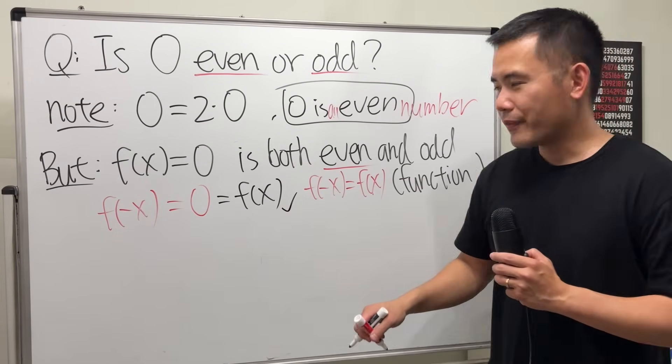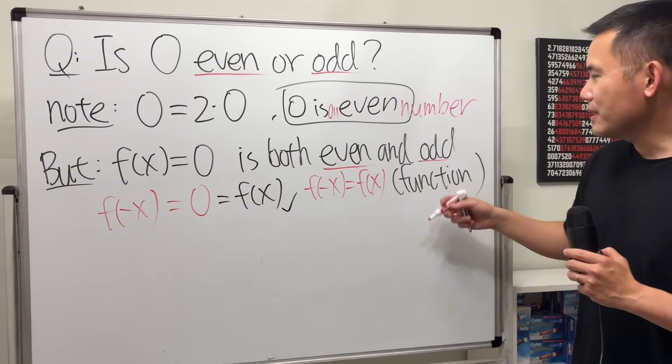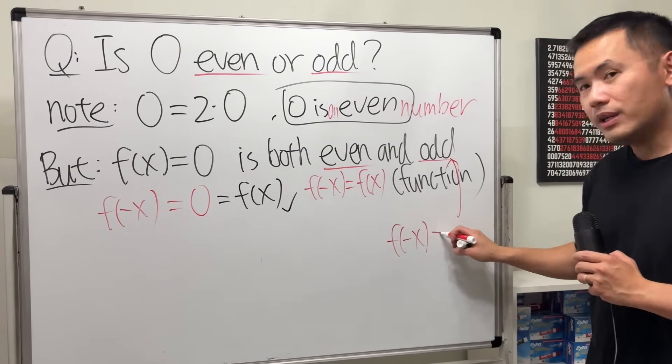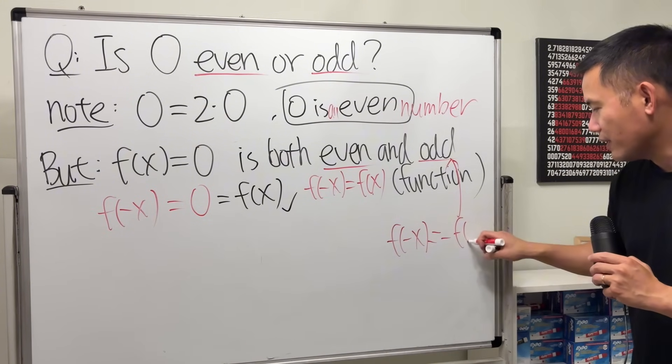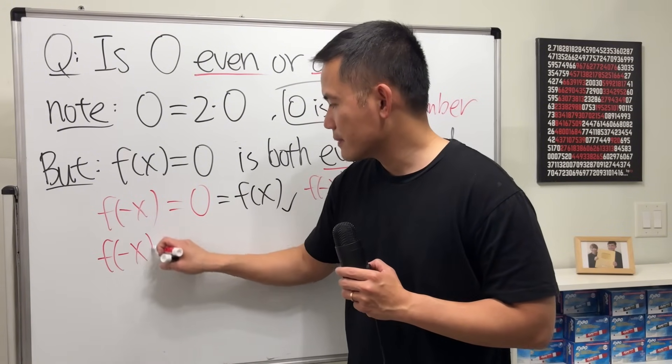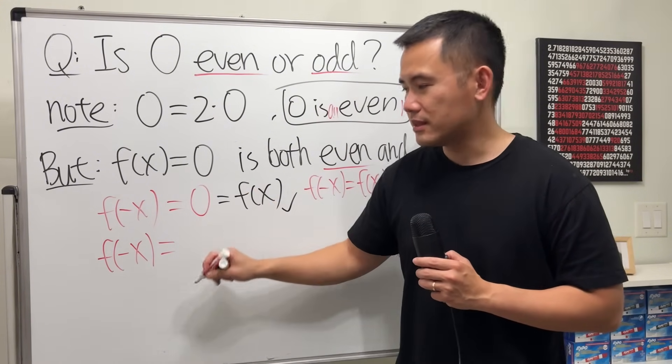Done. Now, why is this odd? Well, by definition for the odd function, it means f of negative x. We can look at that as negative of f of x. So if we check f of negative x, well, yes, that's again 0.